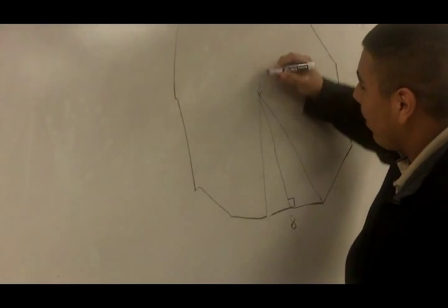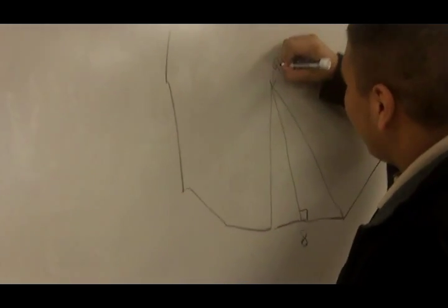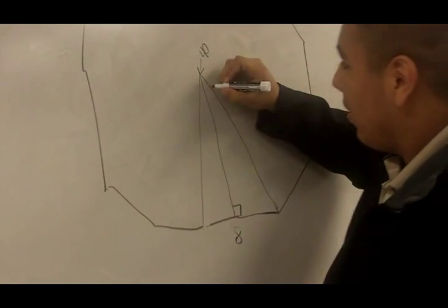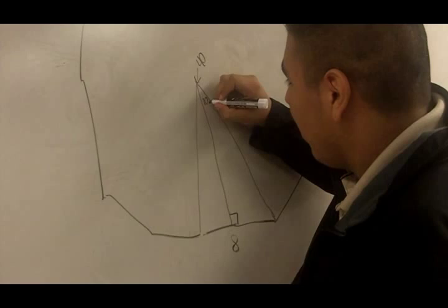So this angle equals 40, and then I bisect the triangle and the angle equals 20.